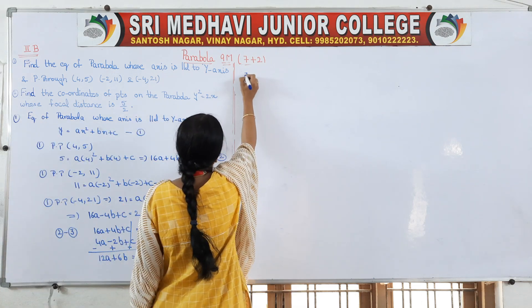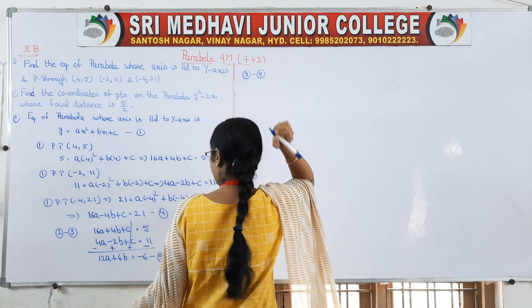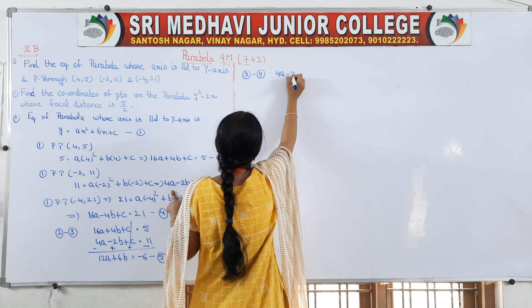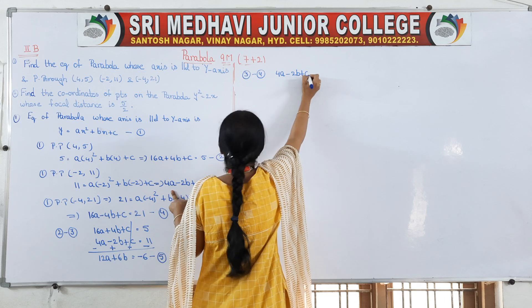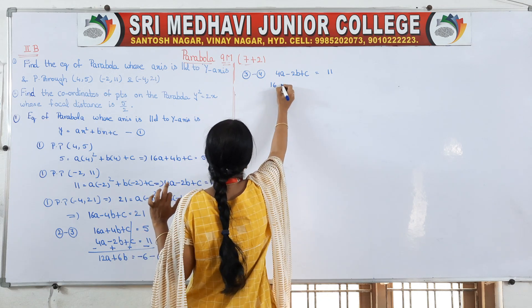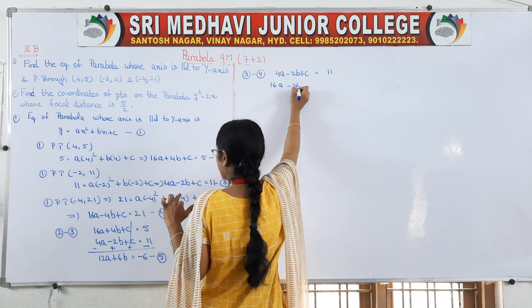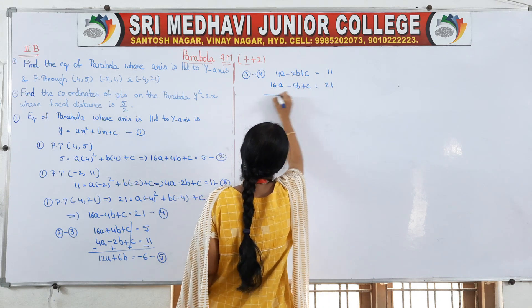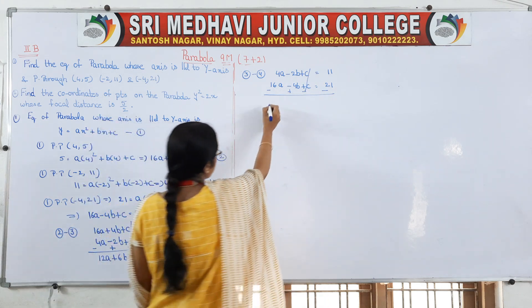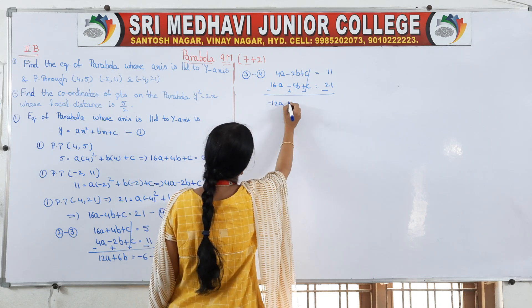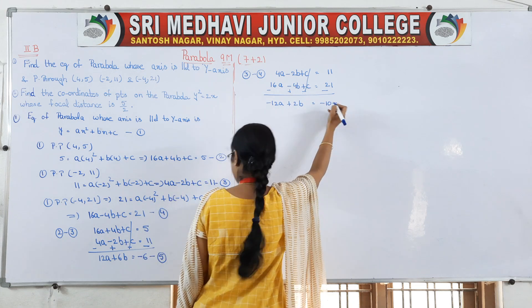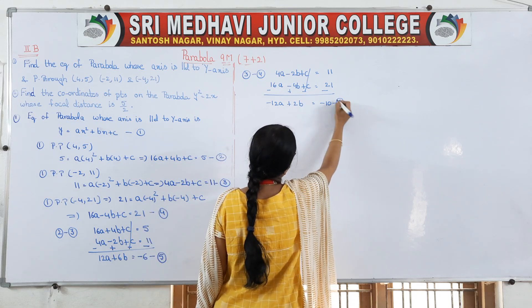Then take equation 3 minus equation 4. Third equation: 4a - 2b + c = 11. Fourth equation: 16a - 4b + c = 21. Subtracting, c cancels, giving -12a + 2b = -10. Consider this as your sixth equation.